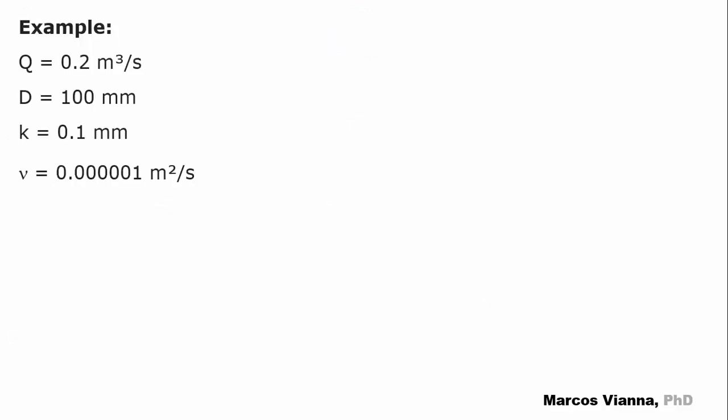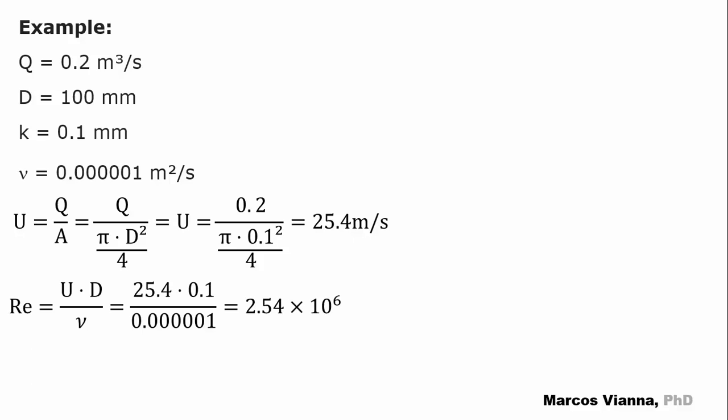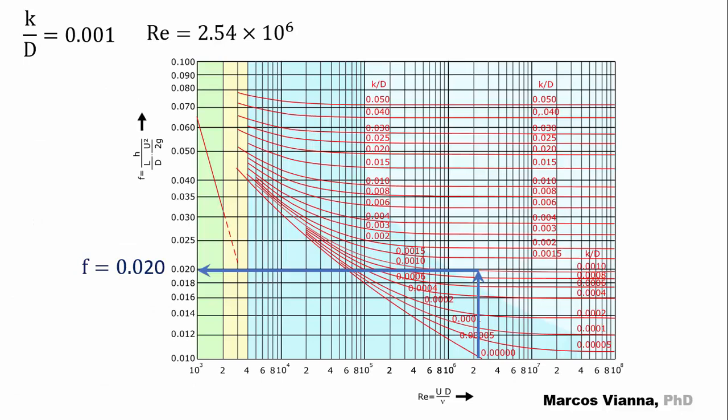Let's solve a third example. These data are not typical of water supply systems. The flow is too high. That's because we want to force a complete turbulence condition. We calculate the average velocity of the water, the Reynolds number, and the K over D relationship. This is what happens on the Moody diagram. Observe that the flow lies within the complete turbulence zone. We find f equals 0.020.